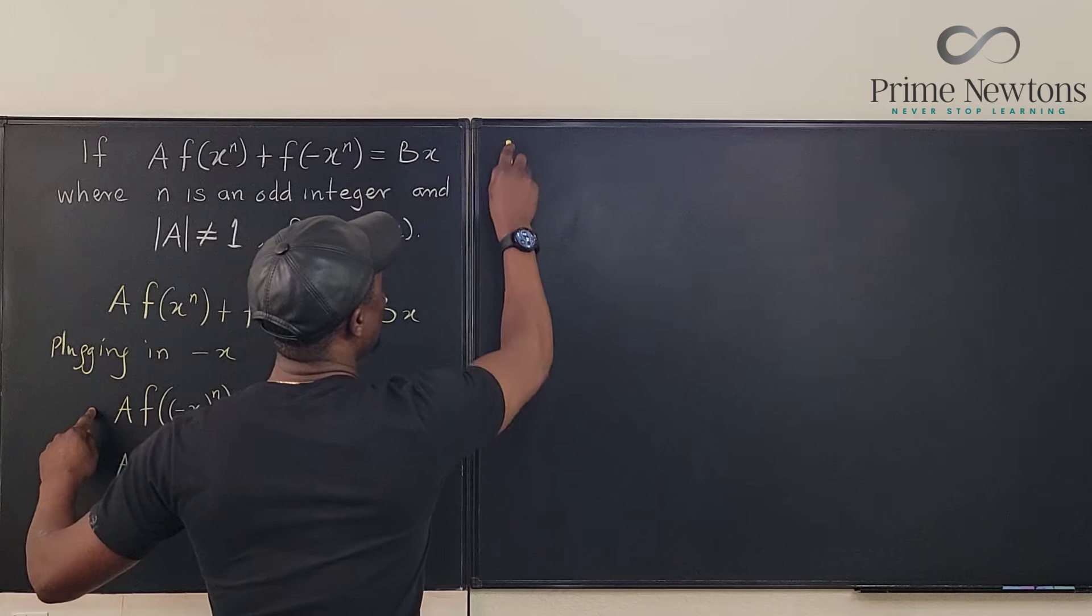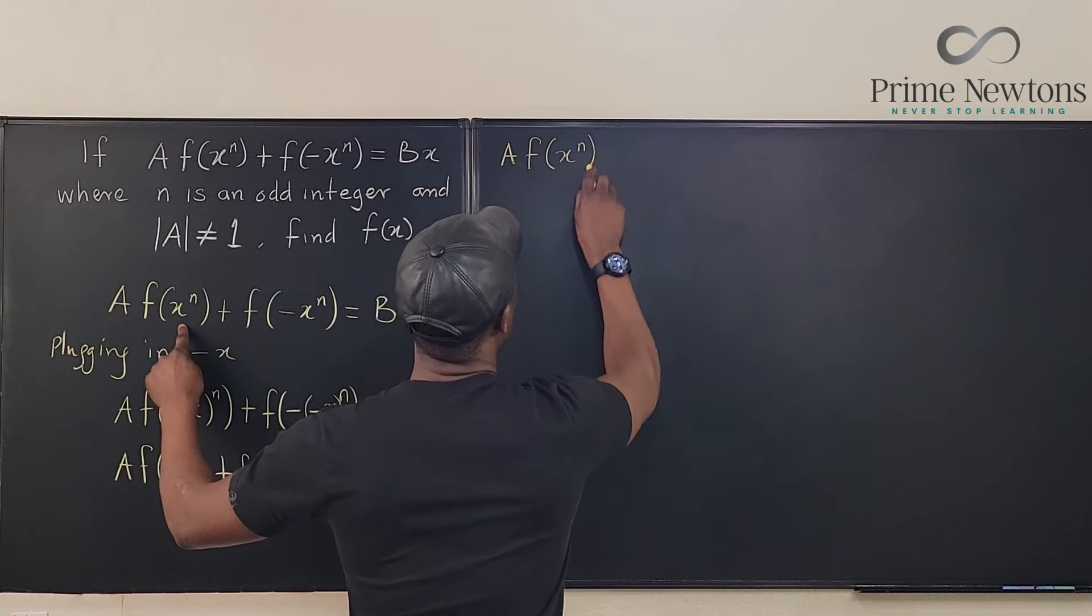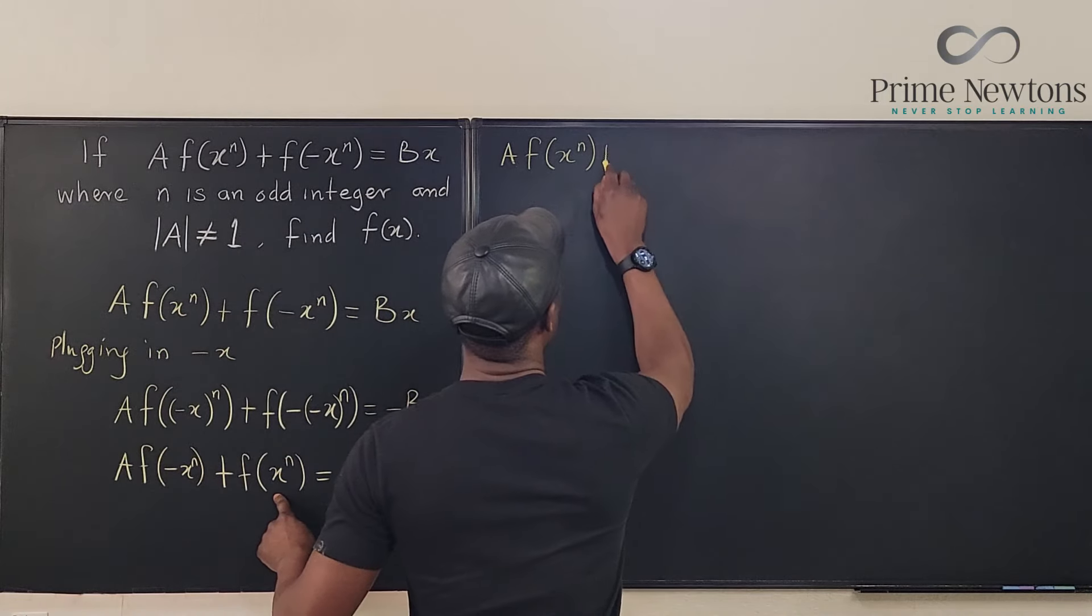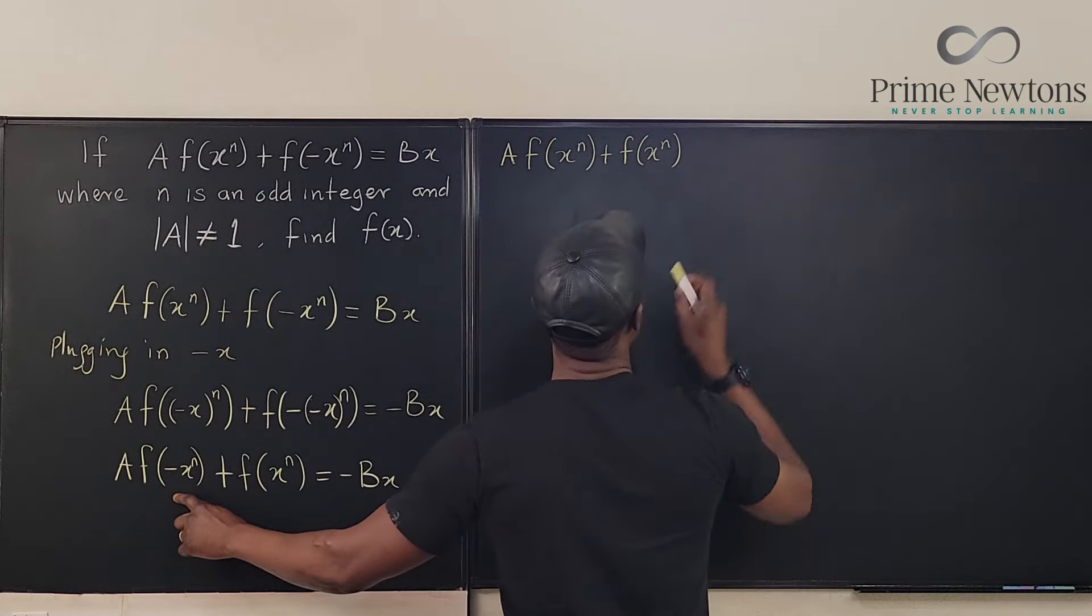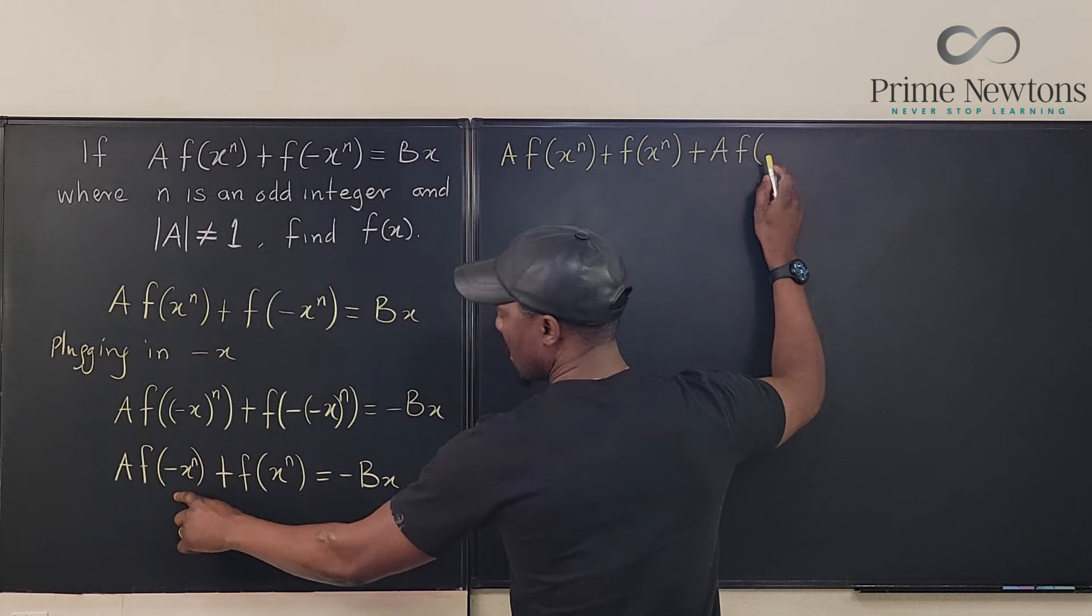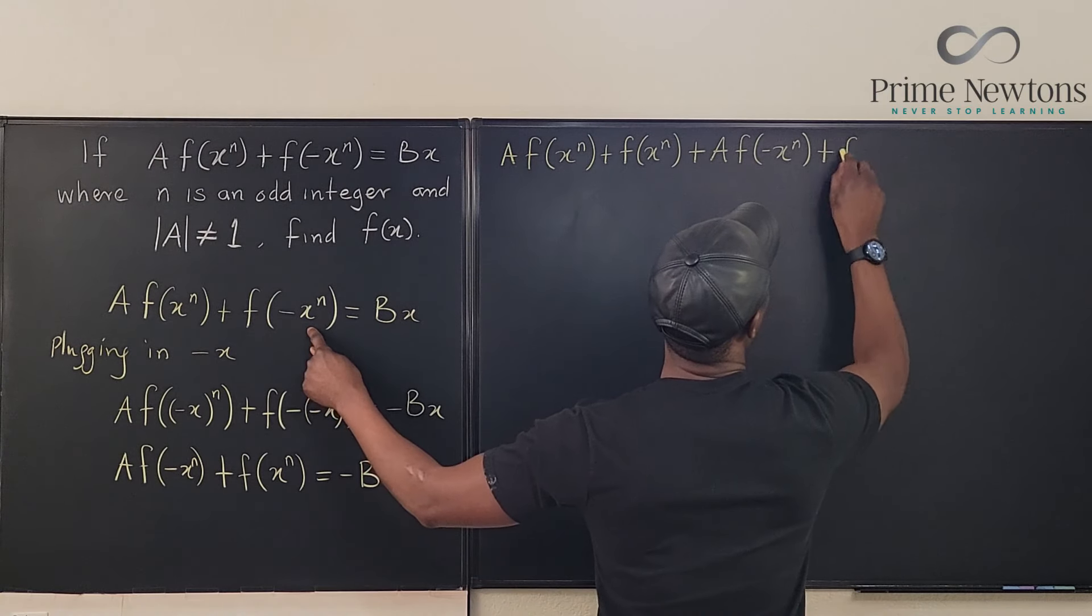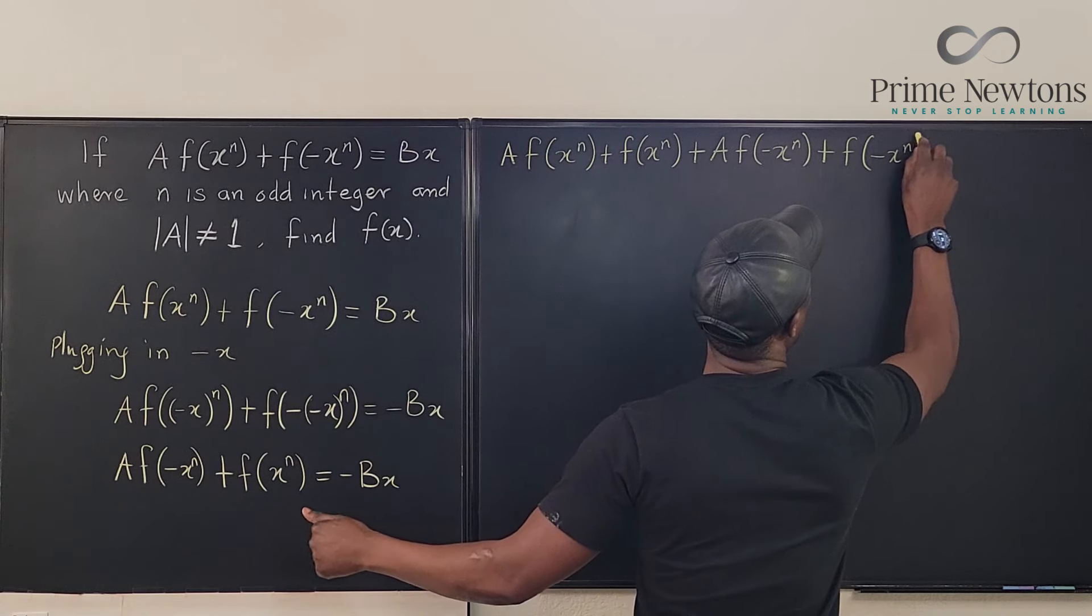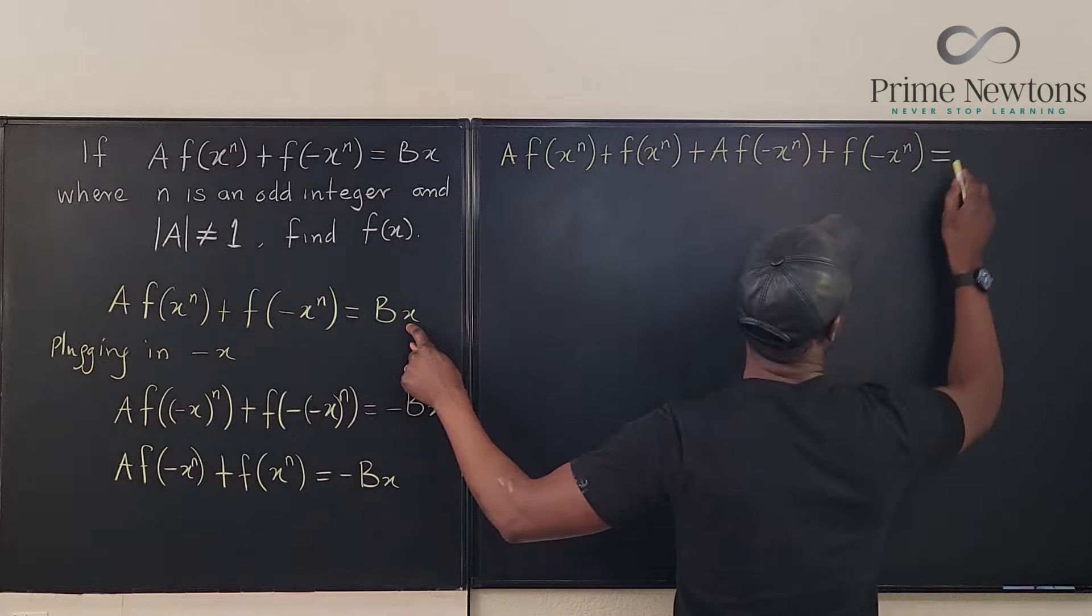So this is what it's going to look like. I'm going to have A times f(x)^n, and I'm going to be adding this to this, so I'll add it to this one, plus f(x)^n, then I'm going to add this plus A times f(-x)^n, plus f(-x)^n. Will be equal to this plus this, which is equal to zero.